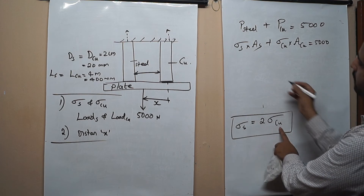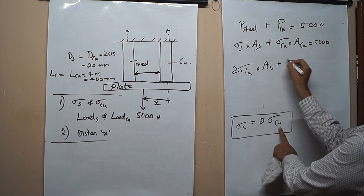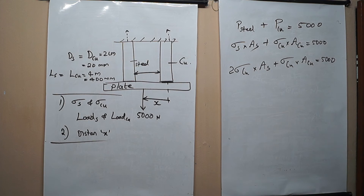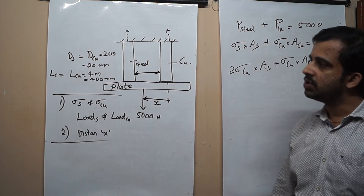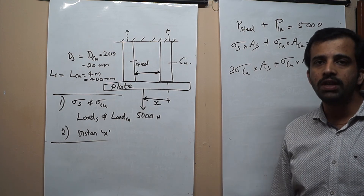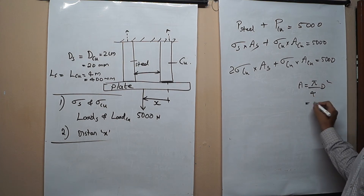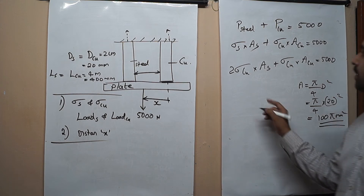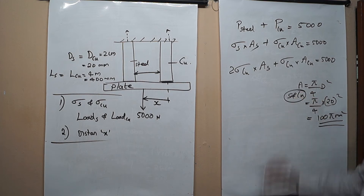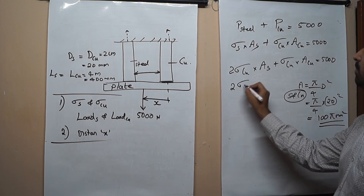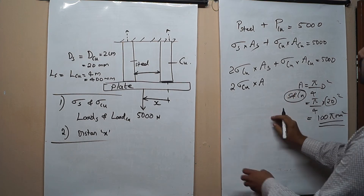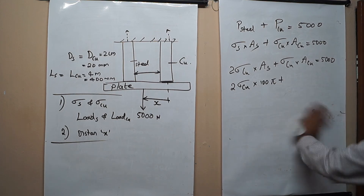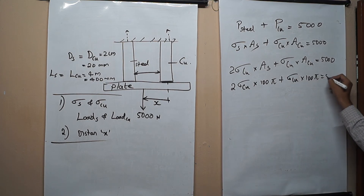Substituting sigma_S = 2 × sigma_copper: (2 × sigma_copper × area_steel) + (sigma_copper × area_copper) = 5000 Newton. Both are circular cross-sections with the same diameter, so area = π/4 × d² = π/4 × 20² = 100π mm². Since diameters are the same, area of steel equals area of copper equals 100π mm². Substituting: 2 × sigma_copper × 100π + sigma_copper × 100π = 5000.